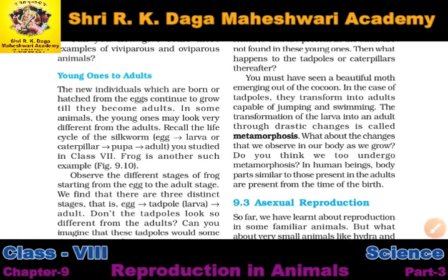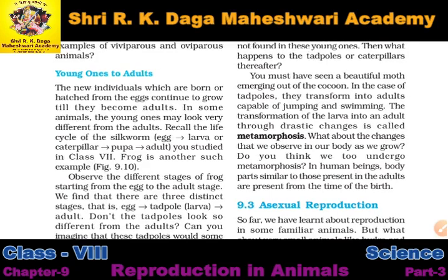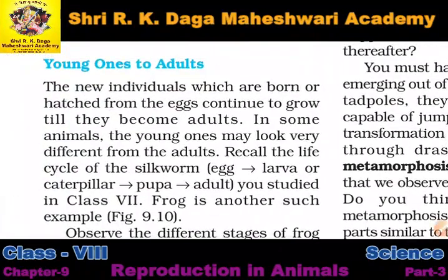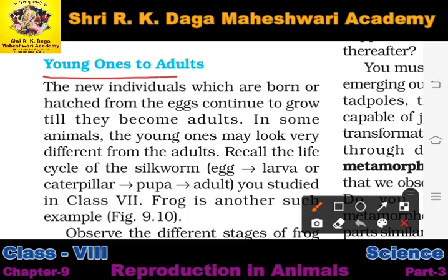Good morning students. In our last class we have seen viviparous and oviparous animals. The animals which give birth to their young ones are called viviparous animals, and the animals which lay eggs are called oviparous animals. Now we are going to start with the further topic: young one to the adult.